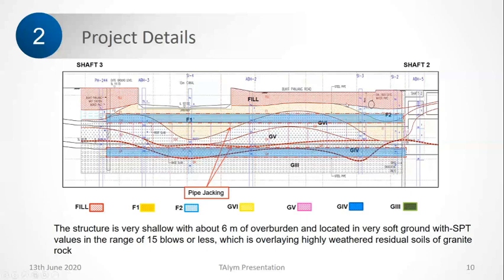This is shaft two and this is shaft three, and we have to construct an underpass from here to here. This is the location of the pipe roof. The pipe roof in this project was designed to be of two meter diameter. The diameter depends on what span of excavation you are going with — if it's a longer span, you need more bending capacity and a higher bending moment, so you need a higher bending capacity pipe.